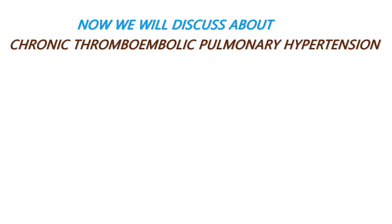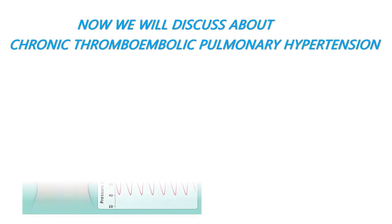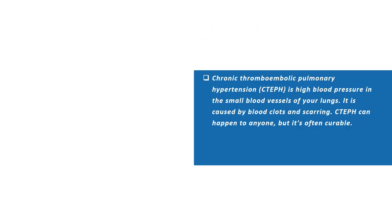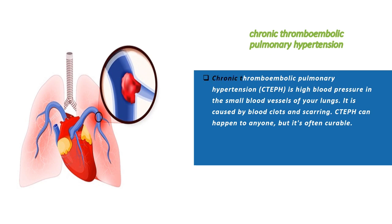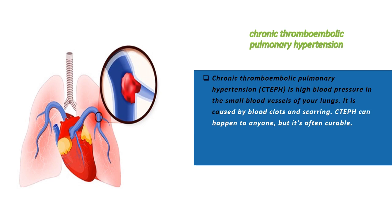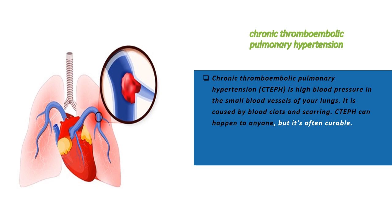Now we will discuss about Chronic Thromboembolic Pulmonary Hypertension (CTEPH). CTEPH is high blood pressure in the small blood vessels of your lungs. It is caused by blood clots and scarring. CTEPH can happen to anyone, but it's often curable.